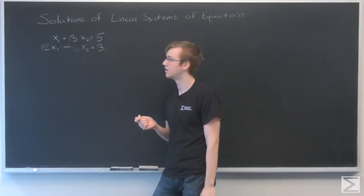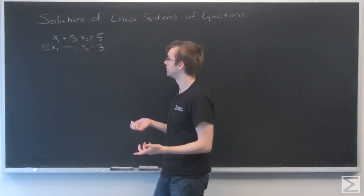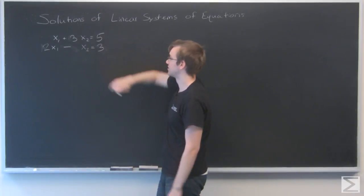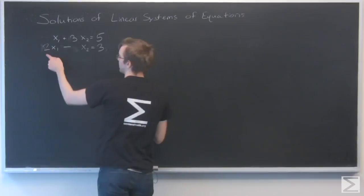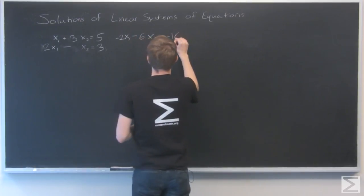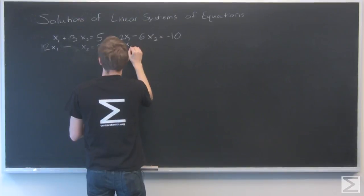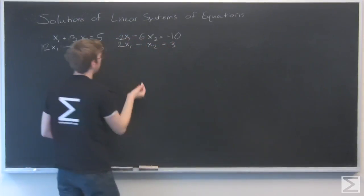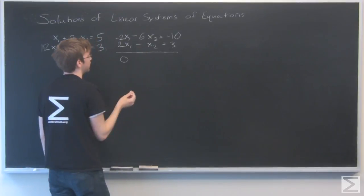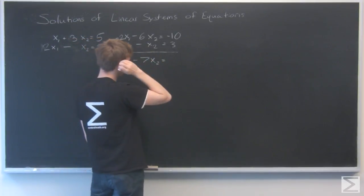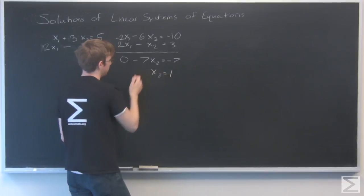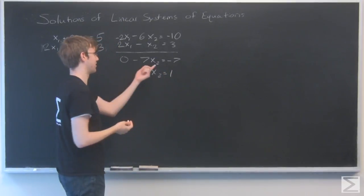One way I might do that, I might look at these two equations and say, I can multiply one of these equations by a constant and use that to eliminate one of the variables. I'll multiply this top equation by negative 2 to get these to match up. So this one will become negative 2x1 minus 6x2 equals minus 10. Now I can just add up these two equations and that becomes 0. Minus 6 plus minus 1 is minus 7x2. And minus 10 plus 3 is minus 7. So I'll just get x2 equals 1.